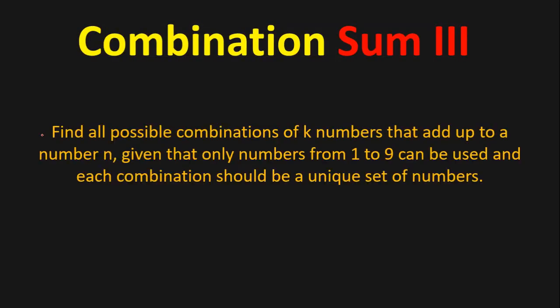Welcome to this video. We're going to solve a coding interview question: Combination Sum 3. The problem statement: find all possible combinations of k numbers that add up to number n, given that only numbers from 1 to 9 can be used, and the combinations should be a unique set of numbers.